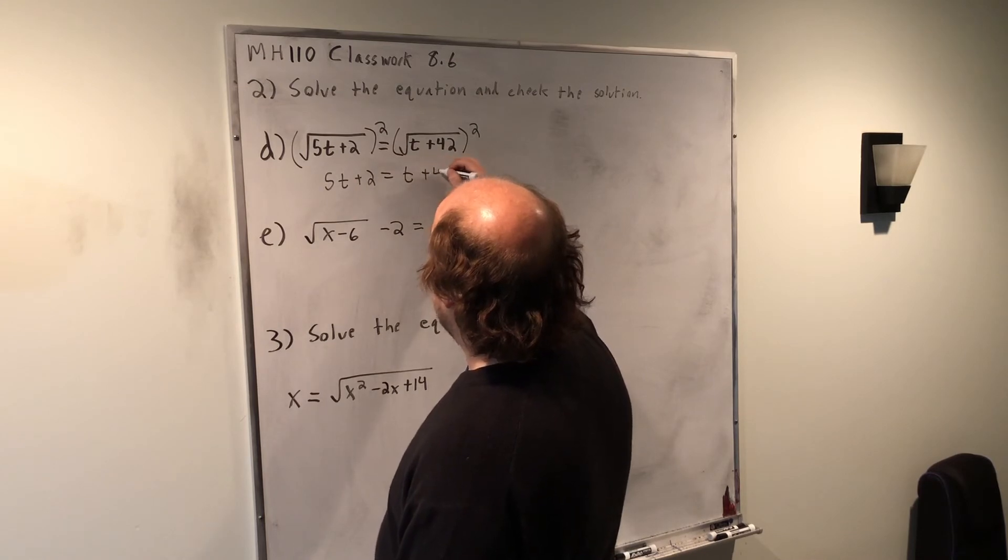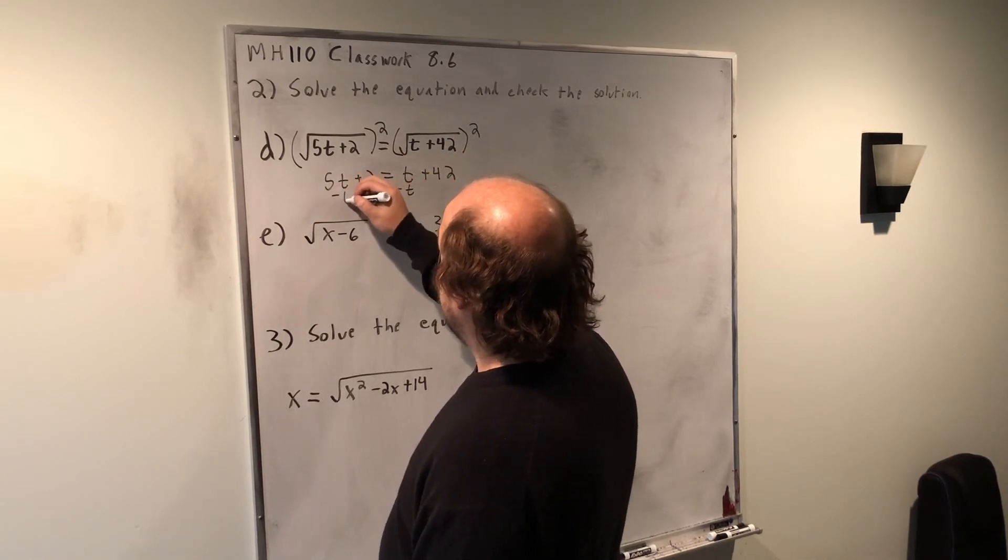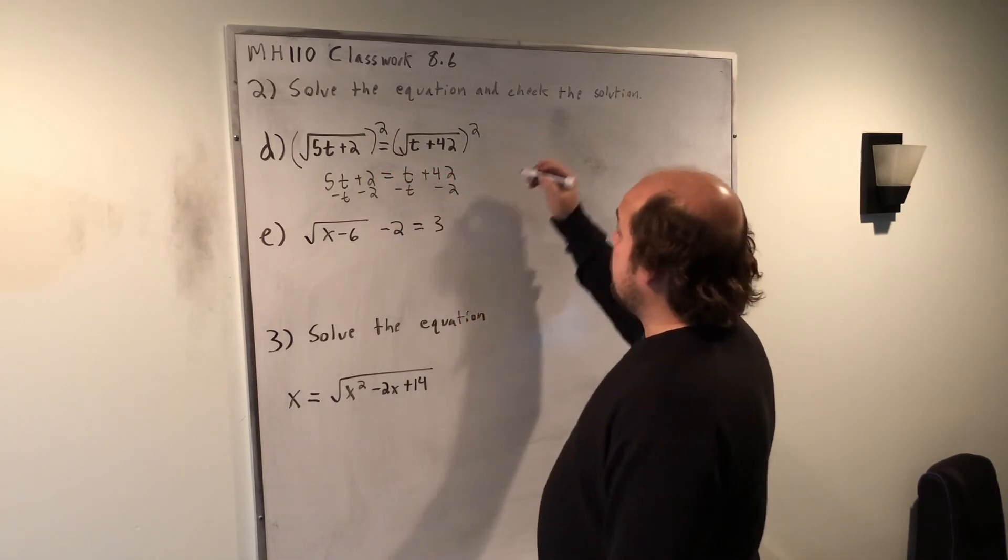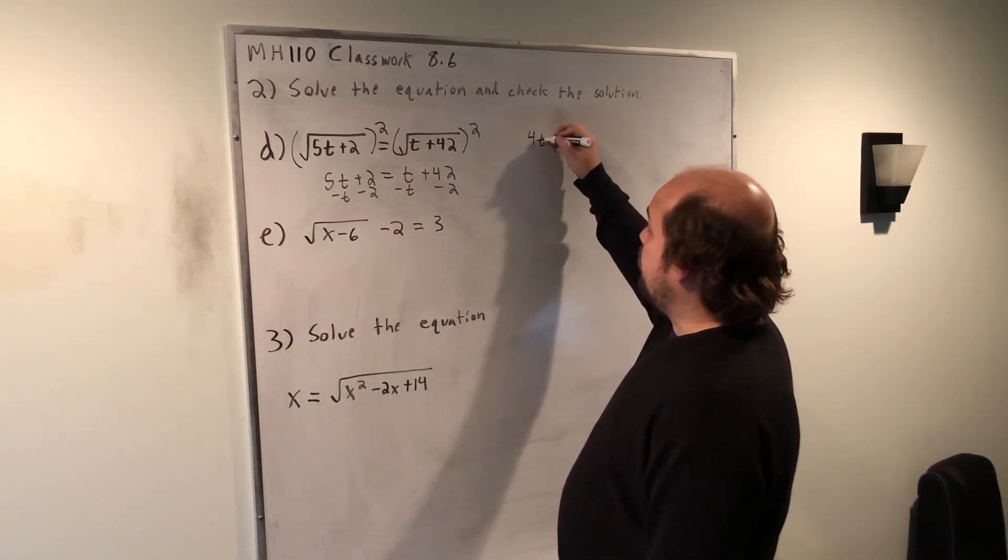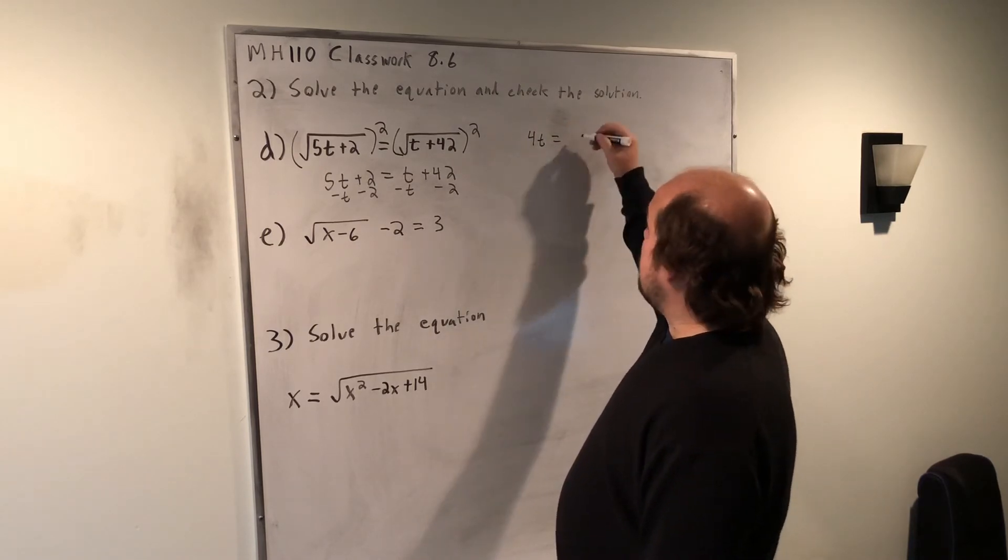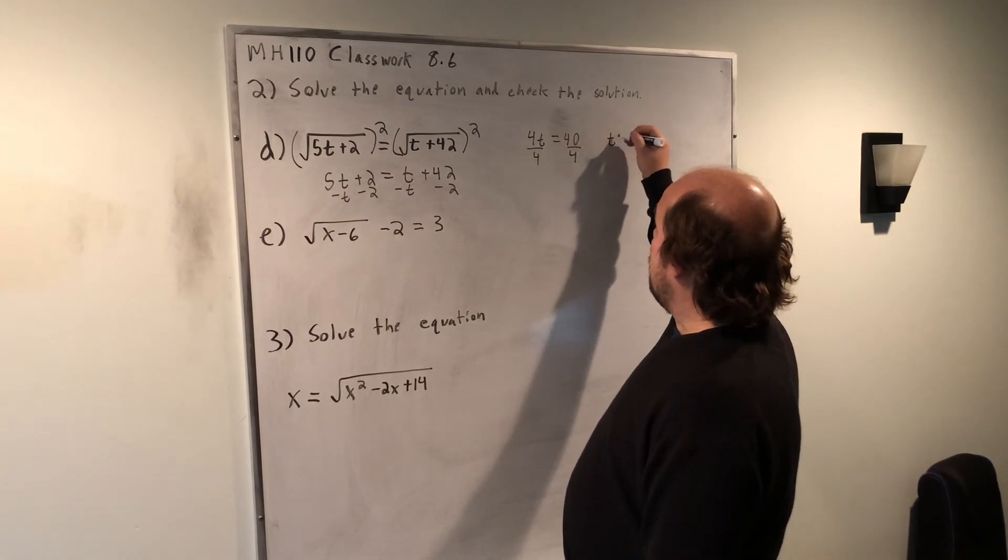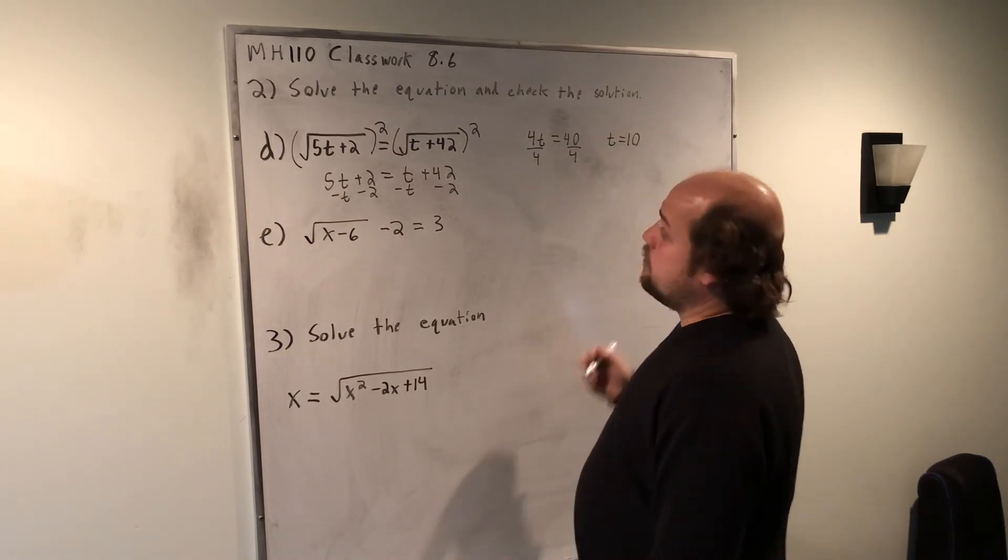If I now subtract t, subtract t, subtract 2, subtract 2. On the left-hand side, I'm left with 4t. On the right-hand side, I'm left with 40. Divide by 4, divide by 4. And I get a final solution of t equals 10.